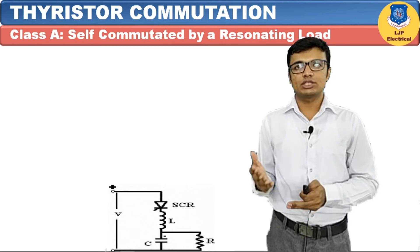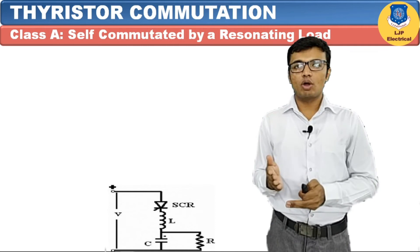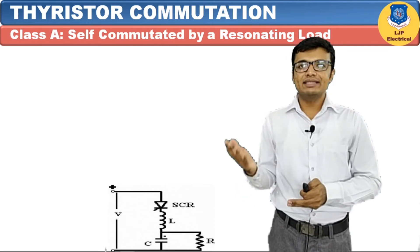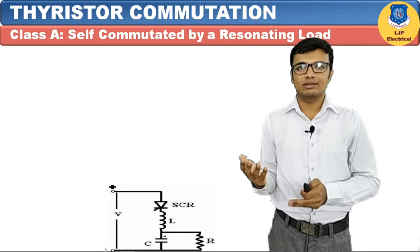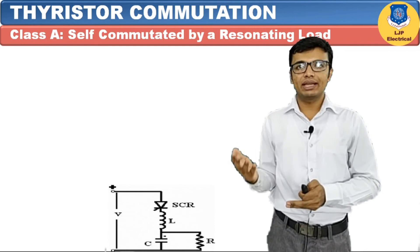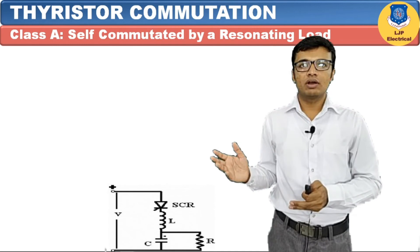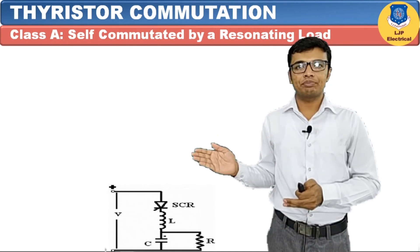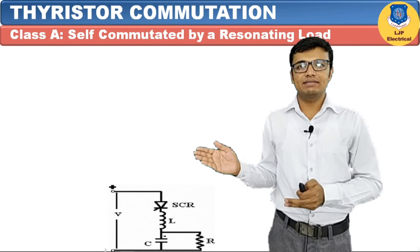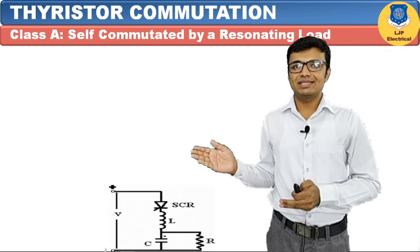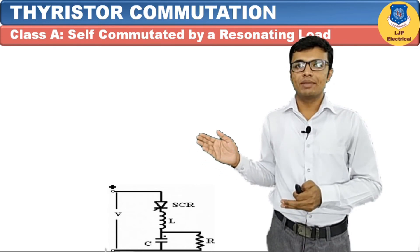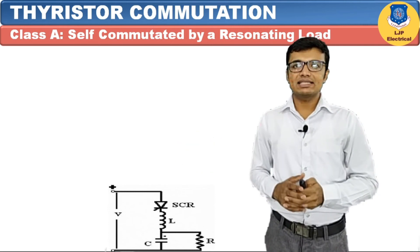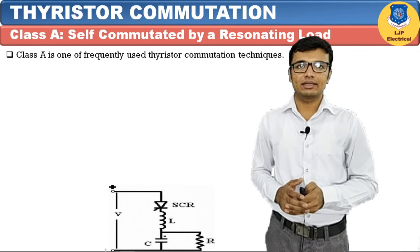Let's see the first commutation circuit — Class A commutation, also called self-commutation by resonating load. It is called resonating because it requires R, L, and C components, which are resonating components. In the circuit diagram of Class A commutation, one SCR is connected in series with one inductor and one capacitor, with a load resistor R connected in parallel.